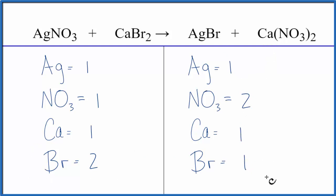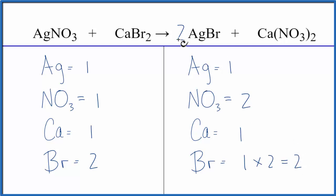Let's fix the bromines first. We'll put a two in front of the AgBr. One times two gives us two bromines, so those are balanced. The two applies to everything — one times two gives us two silvers.